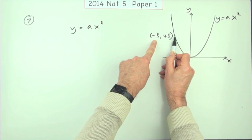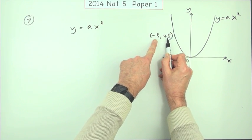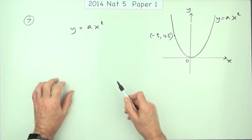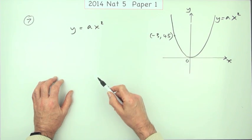So knowing that that lies on that graph, that means those numbers must fit this. See, there's three unknowns here. You can only find one unknown.